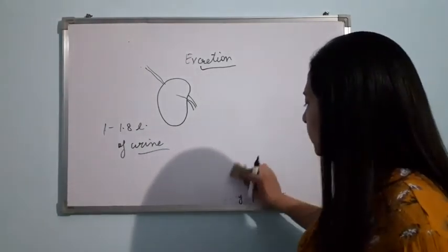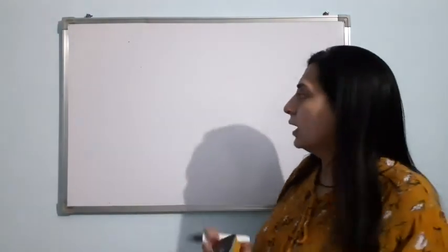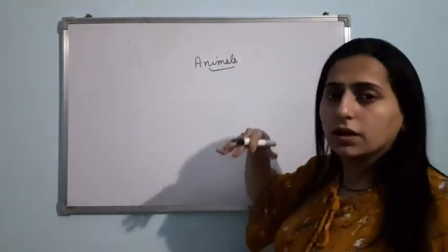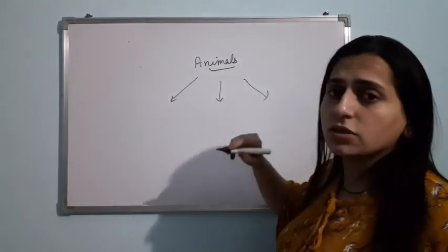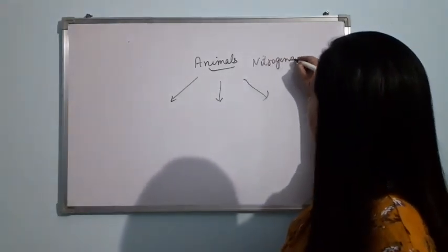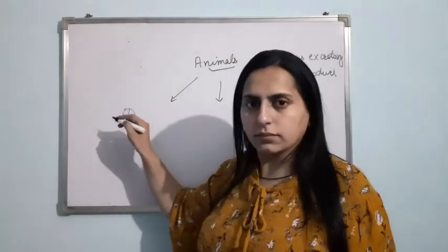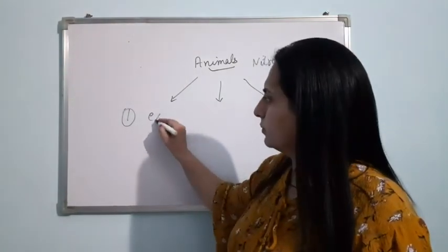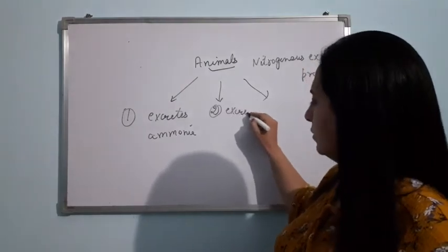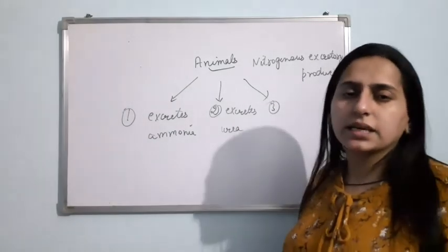In humans the nitrogenous waste product is urea, but that is not the same in all organisms. Animals are of three types on the basis of their nitrogenous excretory product. The first type of organism excretes ammonia. The second type excretes urea — and in this category we belong. The third type excretes uric acid.